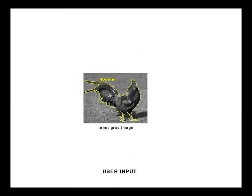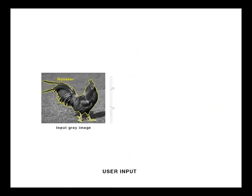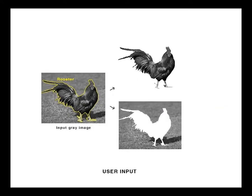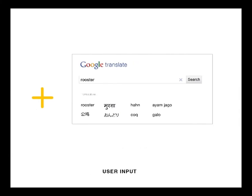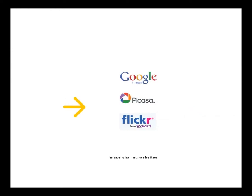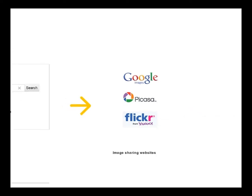To colorize a grayscale image, the user first segments the foreground objects using the easy and intuitive lazy snapping technique and adds a text label for each object. Our system then automatically translates the text label to several languages and uses these terms to search for photos in several image sharing websites.